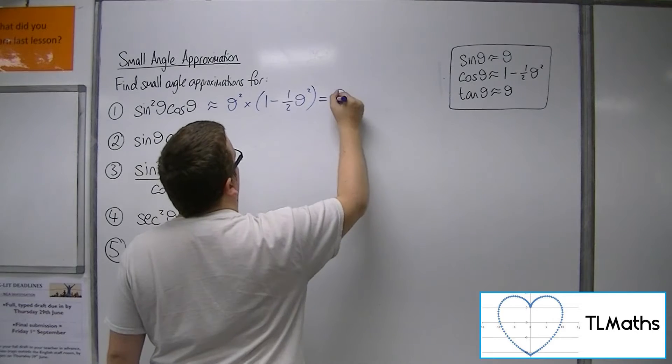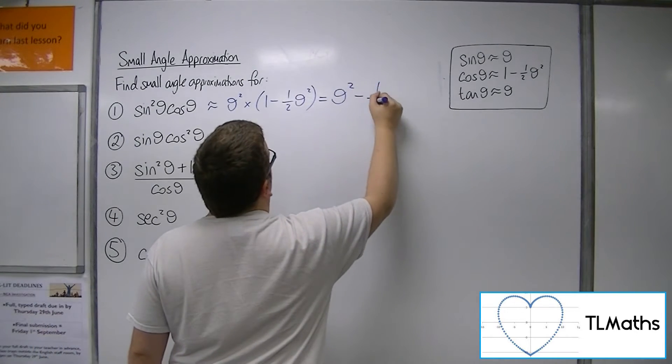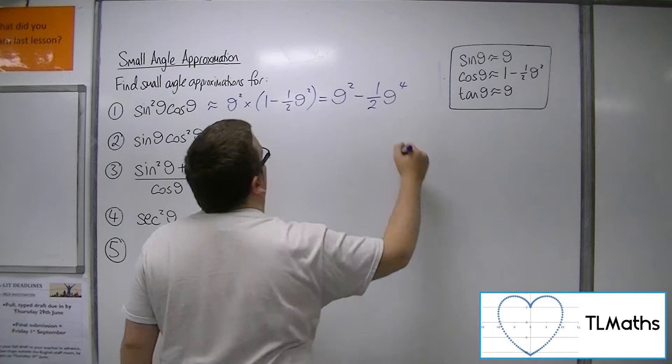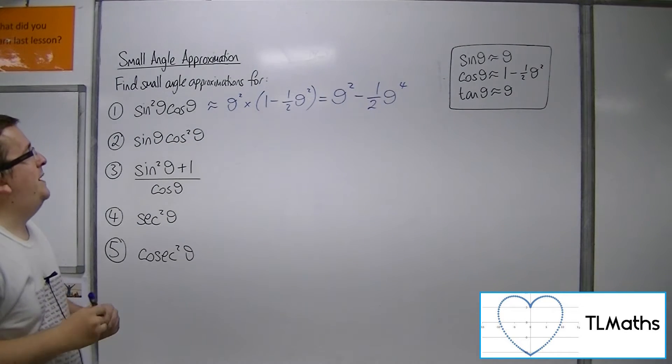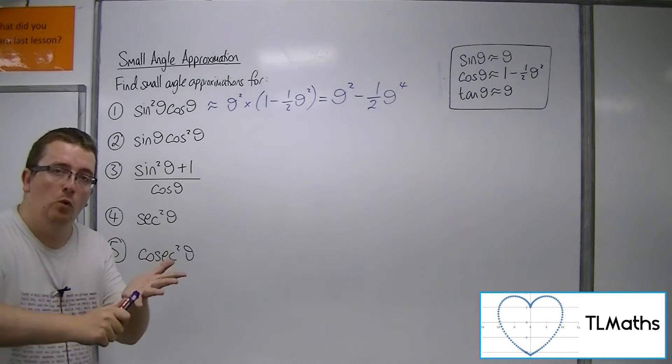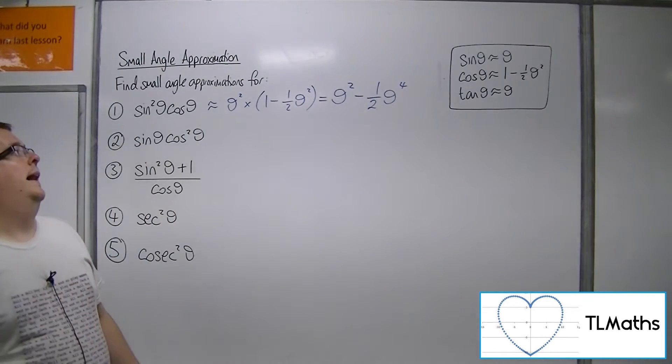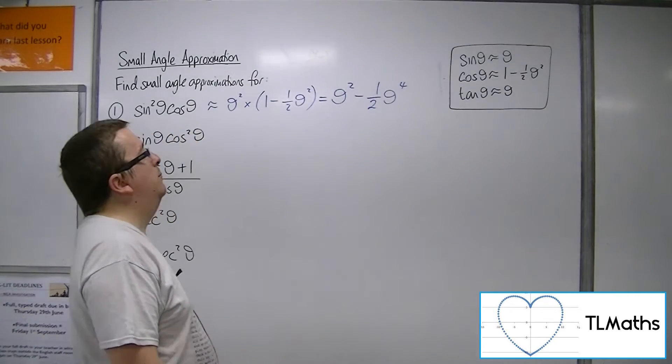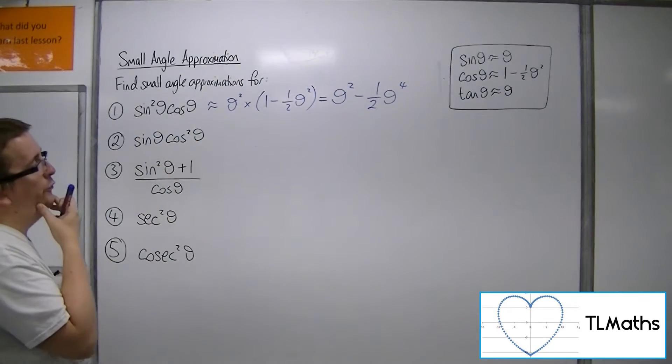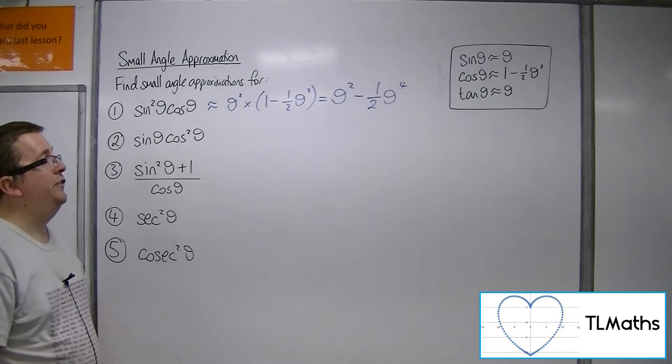So multiplying through, you'd have theta squared, oh sorry, take away 1 half theta to the 4. OK, now obviously because if theta is small, then theta to the 4 will be very small indeed and will likely be negligible. OK, but we would leave it in this format for the time being, unless otherwise stated.